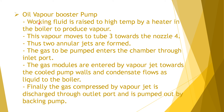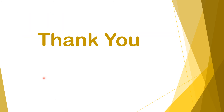The working fluid is raised to high temperature by the heater in the boiler to produce vapor. The vapor moves through the tube towards the nozzle, forming two annular jets. The gas to be pumped enters through the inlet port, and gas molecules are directed by the vapor jet towards the cooled pump walls. The condensate flows as liquid back to the boiler. Finally, the gas compressed by the vapor jet is discharged through the outlet port and pumped out by the backing vacuum pump.